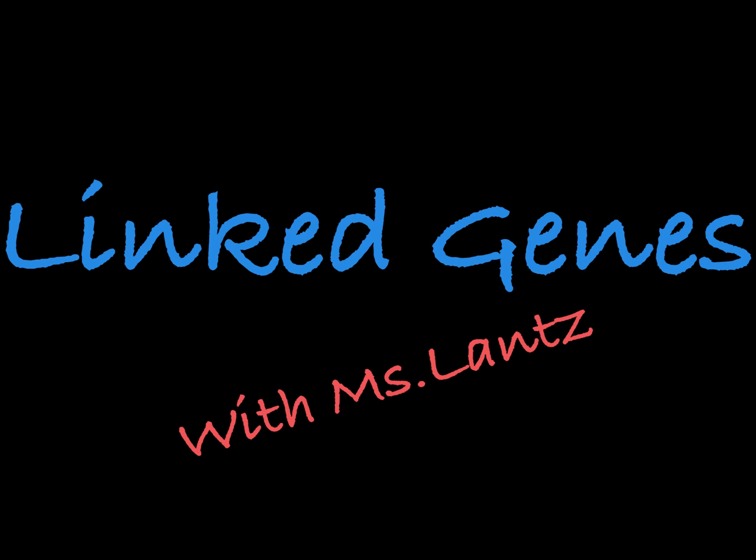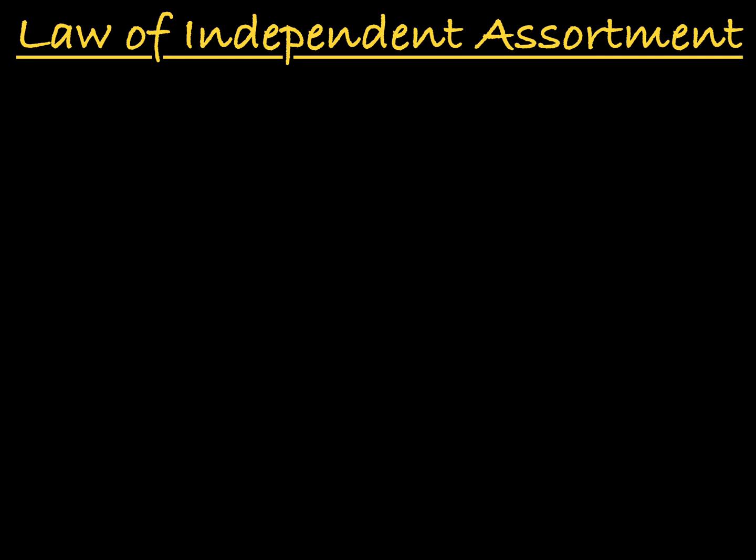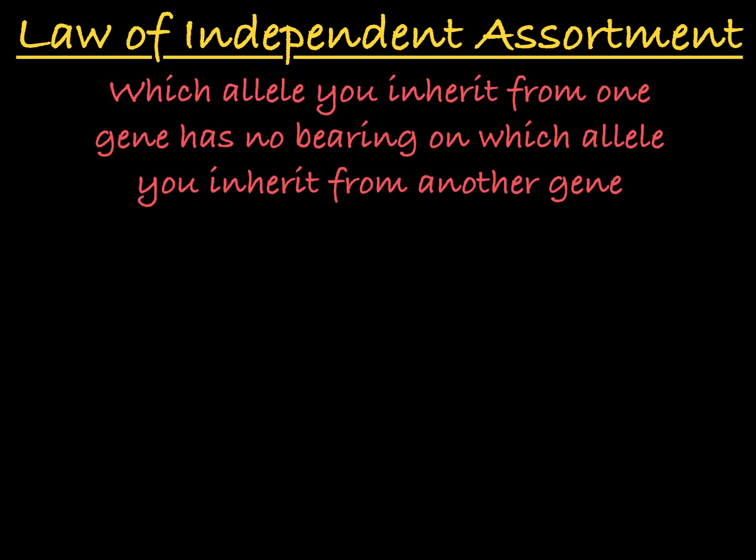In this video, we'll talk about linked genes. The law of independent assortment states that which allele you inherit from one gene has no bearing on which allele you will inherit from another gene.